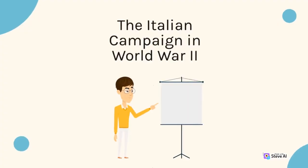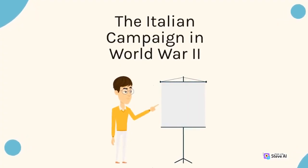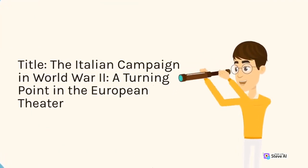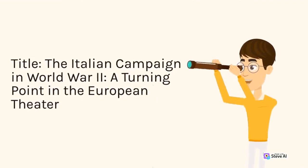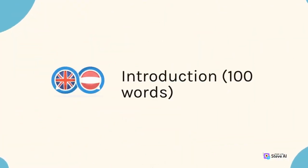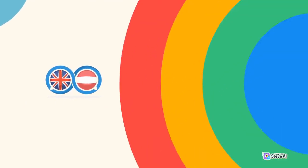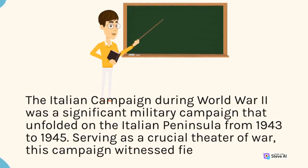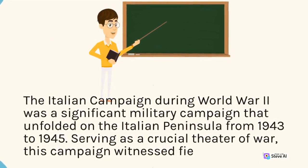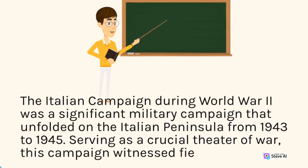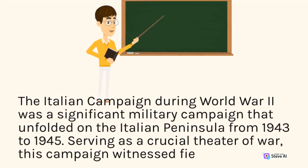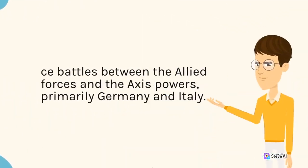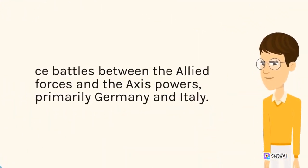The Italian Campaign in World War II: the Italian Campaign was a significant military campaign that unfolded on the Italian peninsula from 1943 to 1945. Serving as a crucial theater of war, this campaign witnessed fierce battles between the Allied forces and the Axis powers, primarily Germany and Italy.